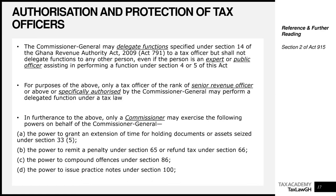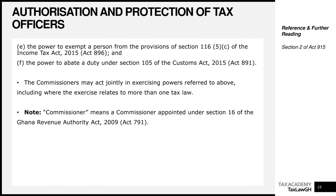Certain functions may only be exercised by a Commissioner — that is, a Commissioner appointed under Section 16 of the GRA Act. These include: the power to grant an extension of time for holding seized documents or assets; the power to remit a penalty or refund tax; the power to compound offenses; the power to issue practice notes; the power to exempt a person from the provisions of the Act; and the power to abate a duty under the Customs Act. Commissioners may also act jointly where the exercise of a function relates to more than one law.